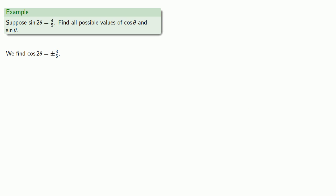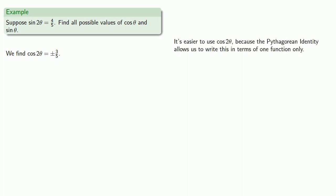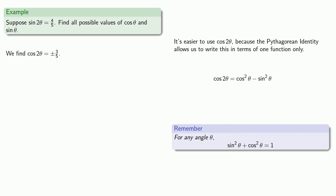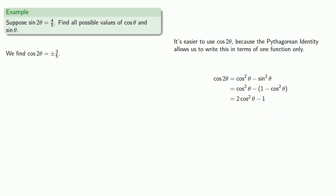This time we don't know anything about the quadrant that two-theta is in, so cosine of two-theta is plus or minus three-fifths. Now, it's actually easier to use cosine of two-theta because the Pythagorean identity allows us to write it in terms of one function only. So cosine two-theta equals cosine squared theta minus sine squared theta, and using the Pythagorean identity, sine squared theta equals one minus cosine squared theta, which simplifies to two cosine squared theta minus one.